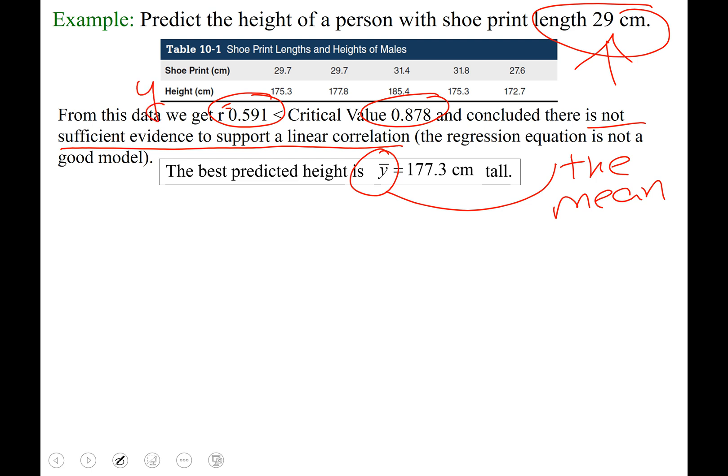If you remember the heights, those were our y values. You can type in these five numbers, add them up and divide by five to get 177.3. Or you can type them into list one, run one variable stats. It'll look like x bar on the output screen, but that's another way to get the 177.3. Our prediction for a person with a shoe print length of 29 centimeters is that person is 177.3 centimeters tall.